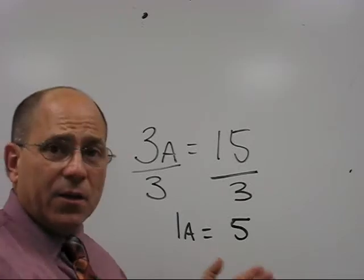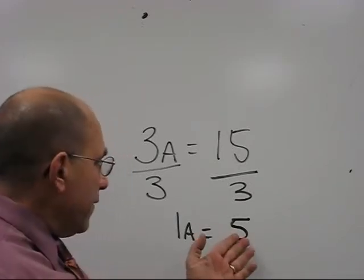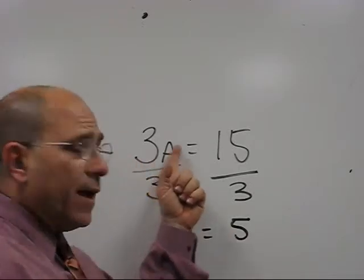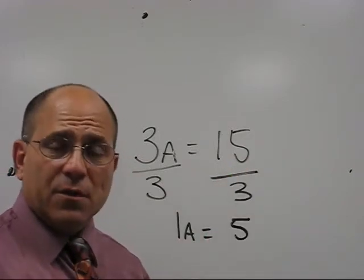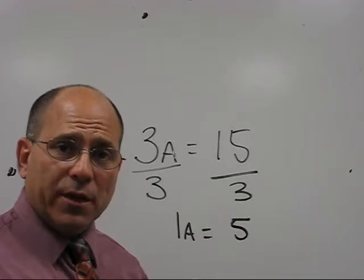The way we check it, obviously, is to take that 5 and put it back right here. 3 times 5 equals 15. That's how you use division to solve a multiplication equation.